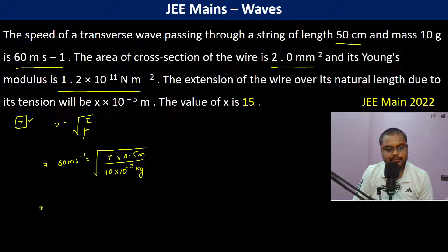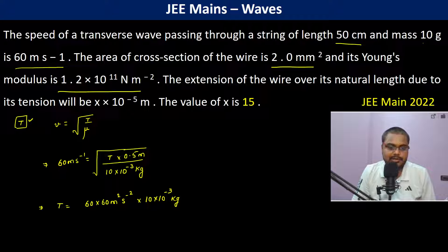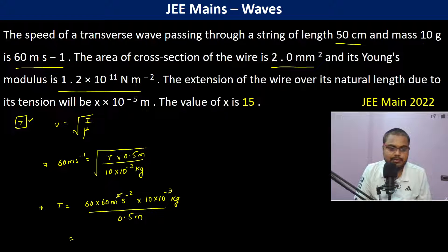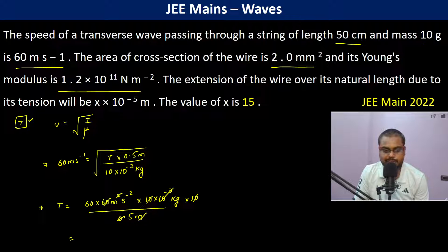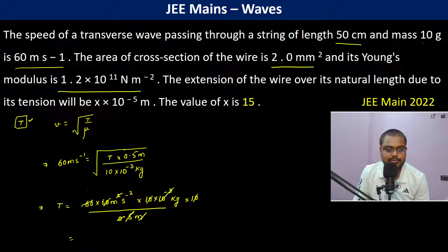Therefore, T becomes 60 into 60 meters squared per second squared into 10 into 10 to the power minus 3 kg divided by 0.5 meters, which is equal to 0.5 meters. So this is gone, this is gone, this here becomes again 10.